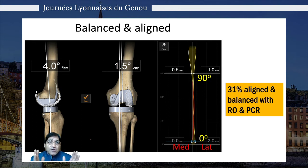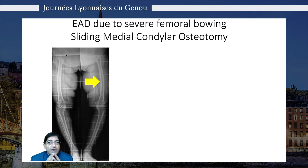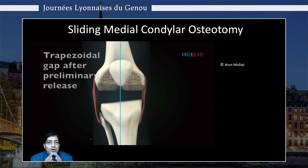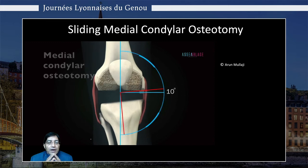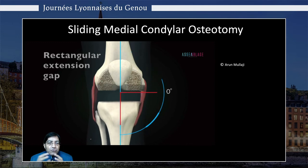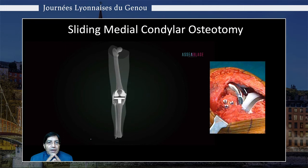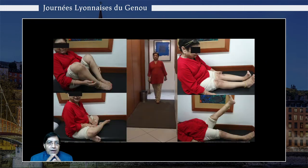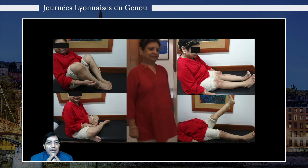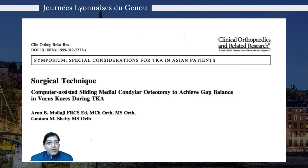If there's an extra-articular deformity, one may need to do a sliding medial condylar osteotomy, as in this example where the x-rays can be seen before and after surgery. This is an animation of the technique: when you have a trapezoidal gap, we slide the medial condyle distally along with the attached MCL until we get a rectangular gap. We fix the condyle with a couple of screws, and this is the patient at three months showing an excellent range of motion and a perfectly normal gait. We reported this in Clinical Orthopaedics.